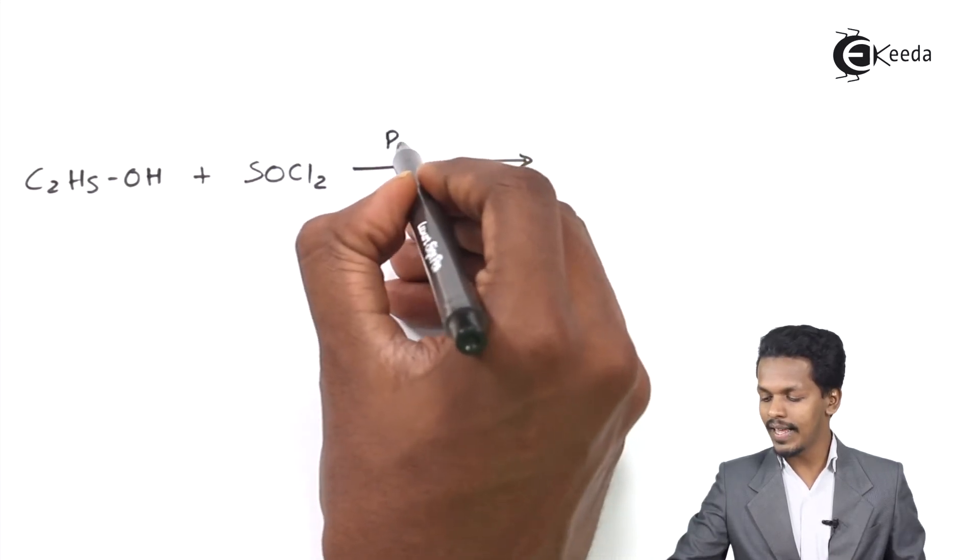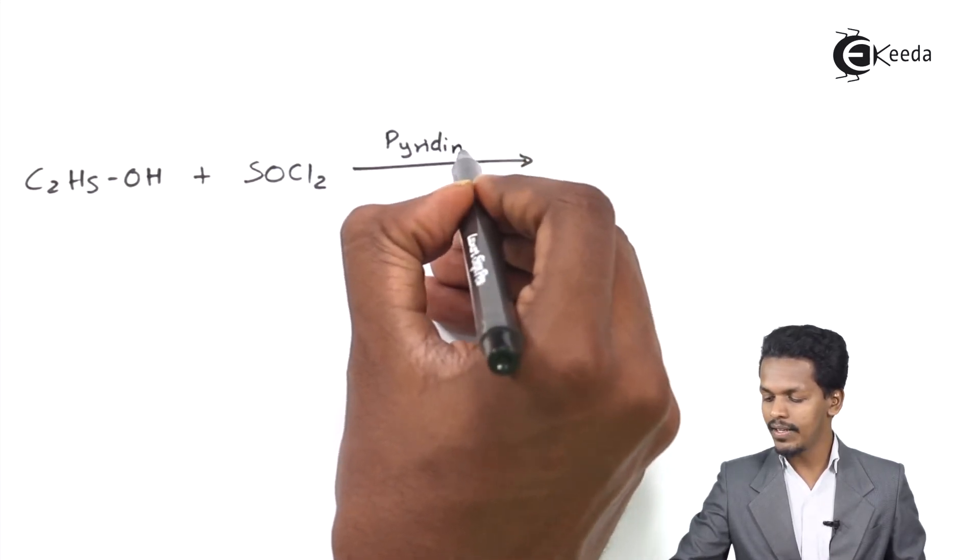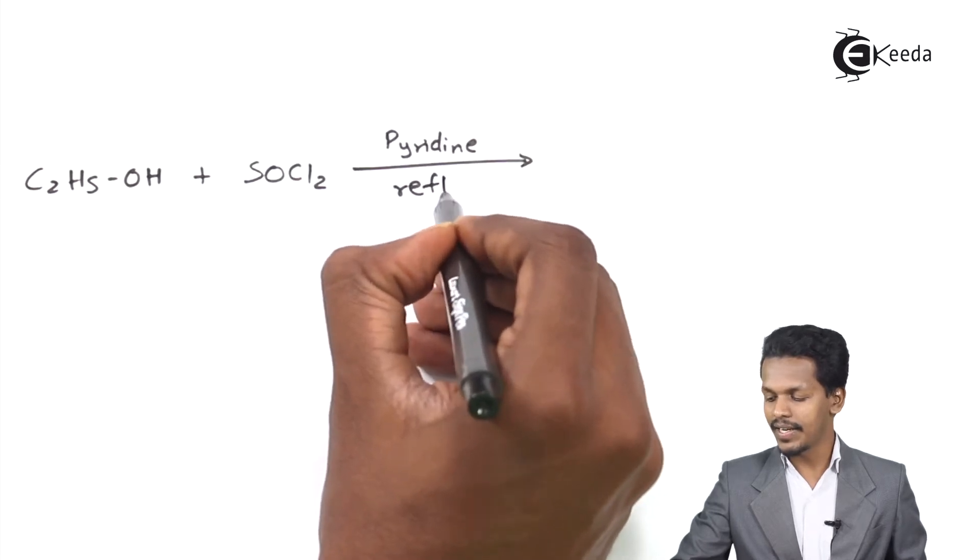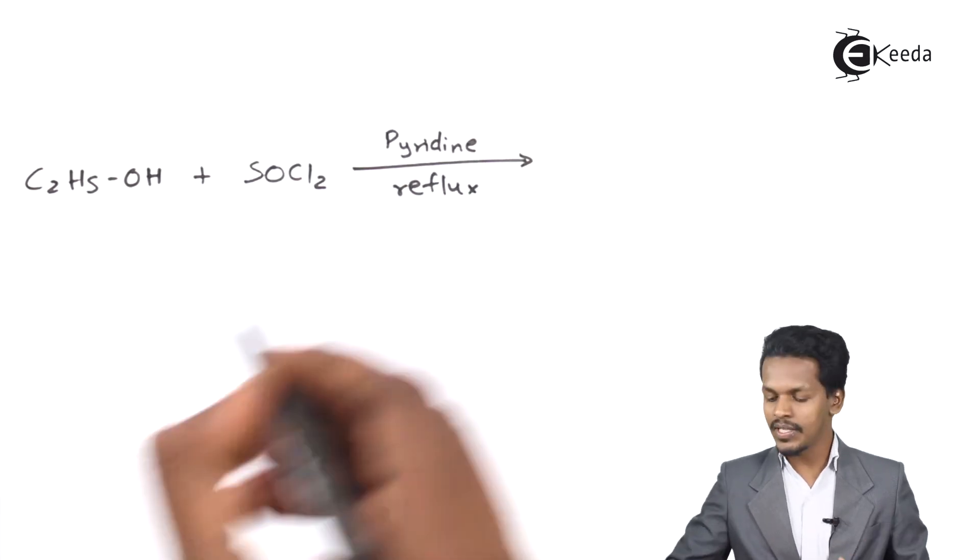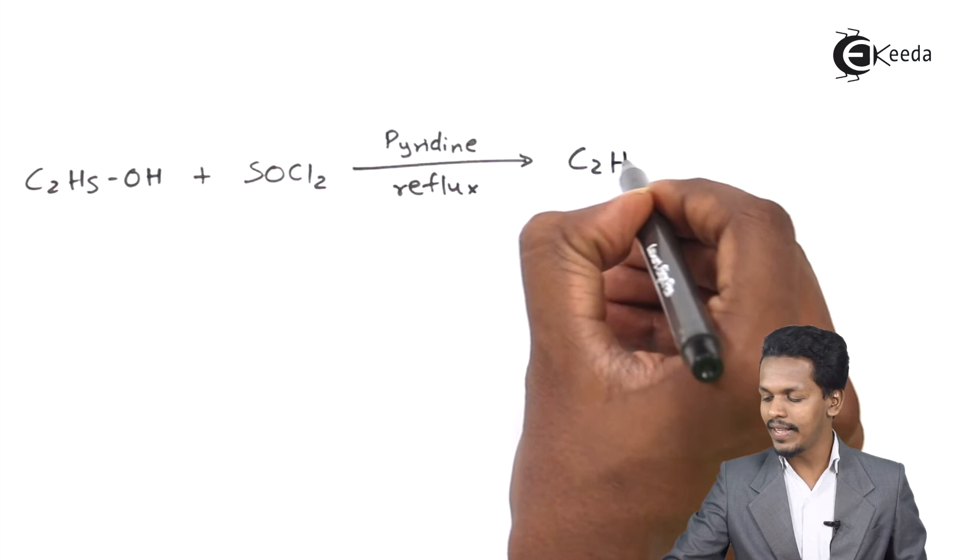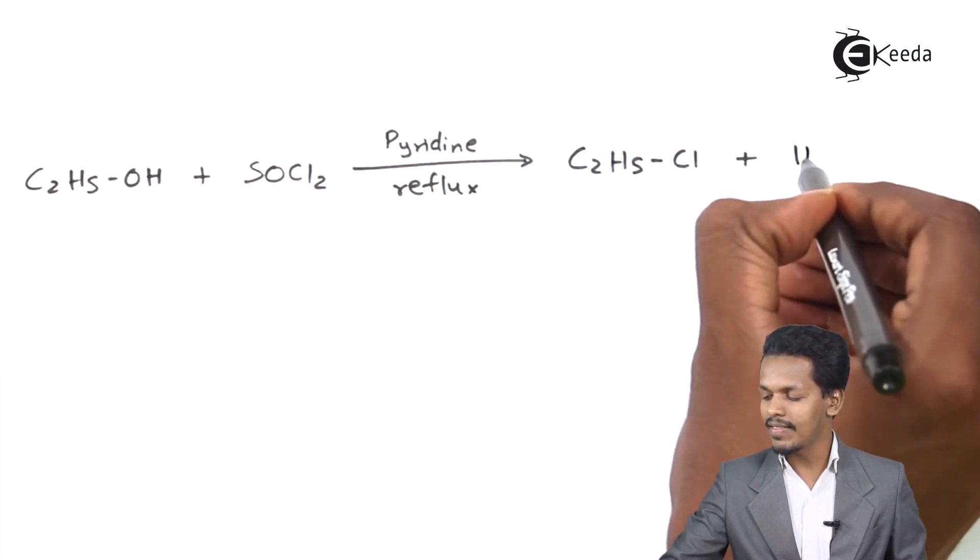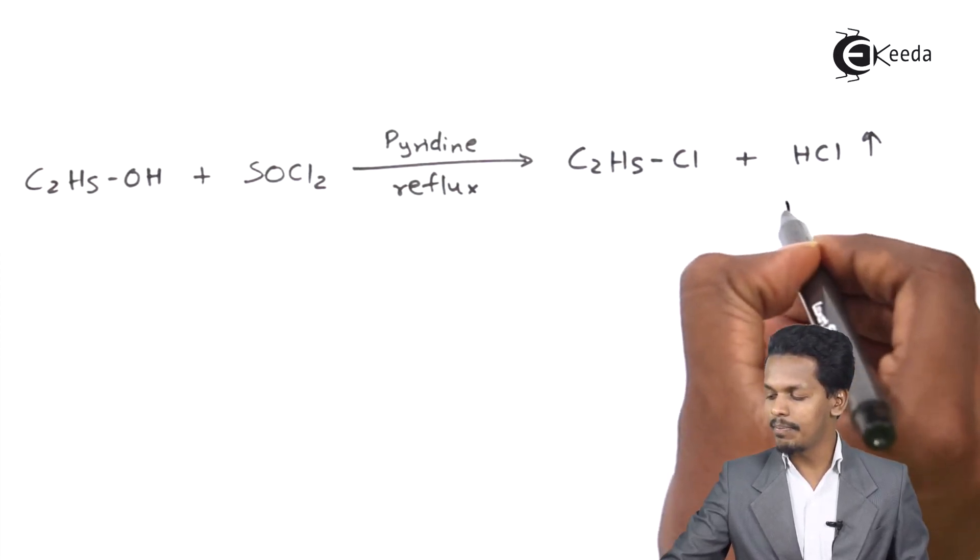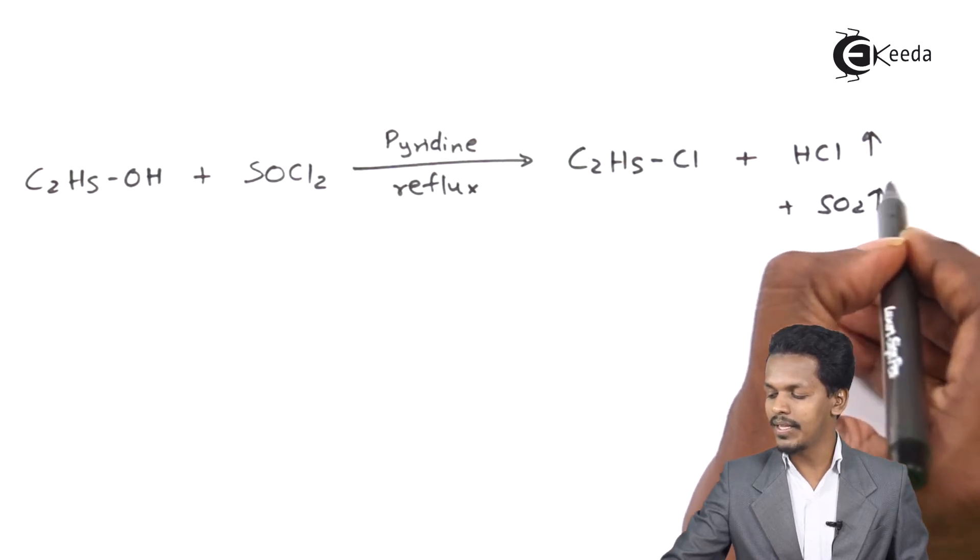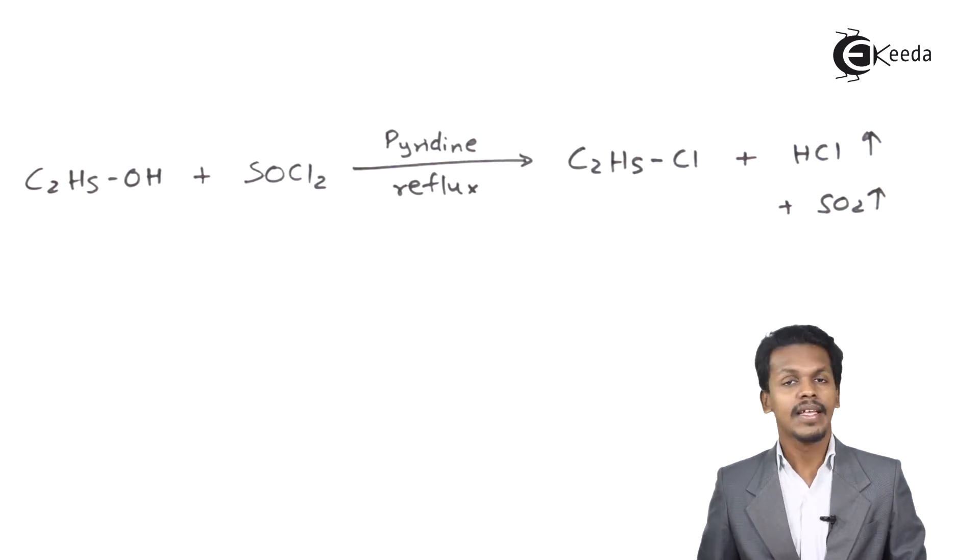This is in presence of pyridine as a solvent, and we are refluxing it. The reaction proceeds such that the product we obtain is C2H5Cl, along with HCl and SO2 as byproducts in the form of gases.